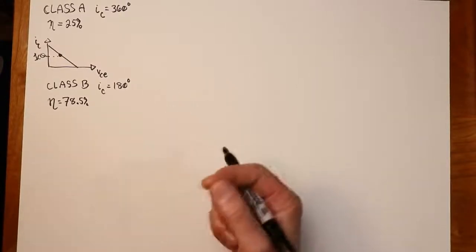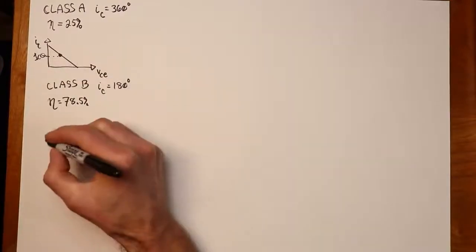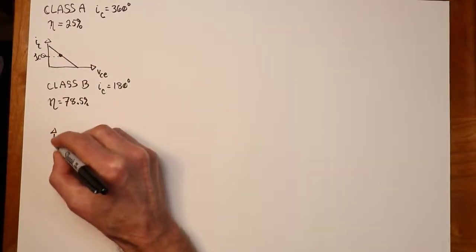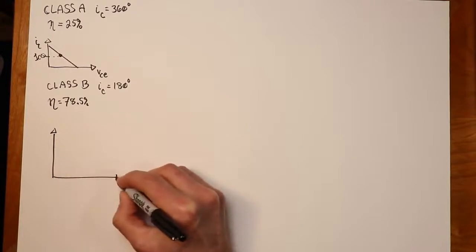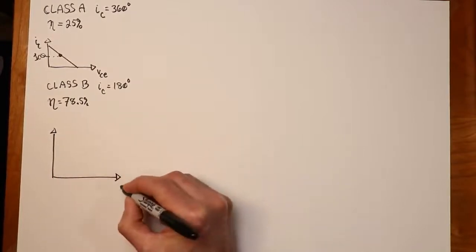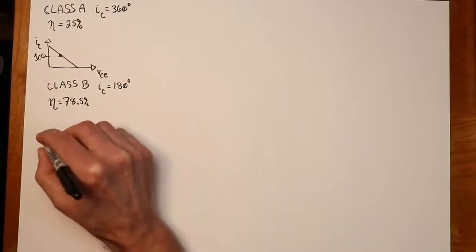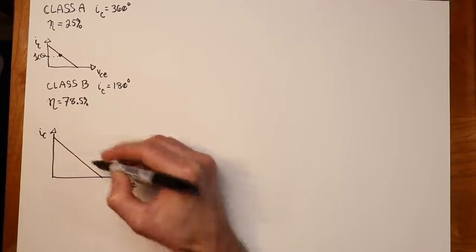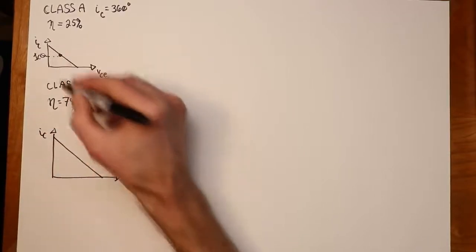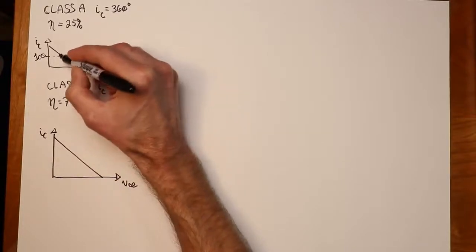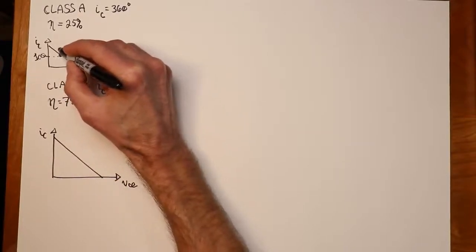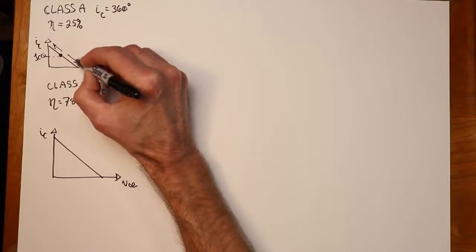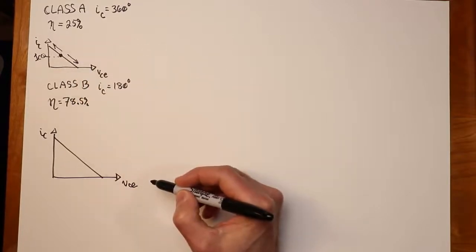So how do we do this? Well, it comes back to our load line. Here is our AC load line, VCE, IC. As I said up here, if you have a Q point in the center, you can swing up and you can swing down, you get the full cycle.